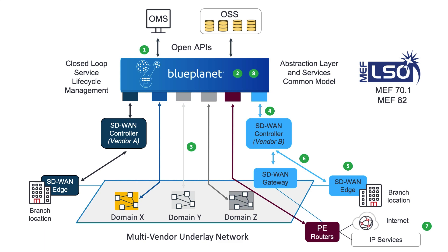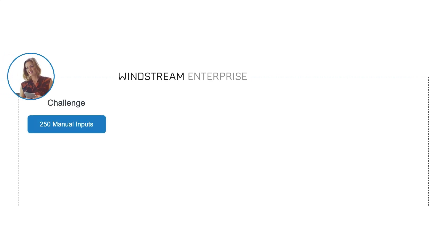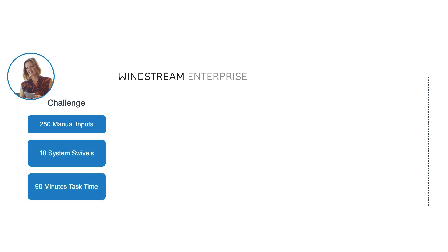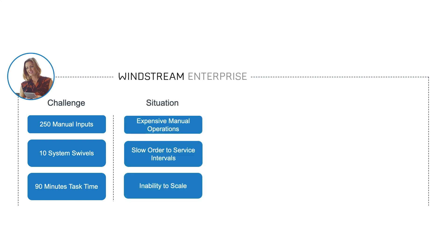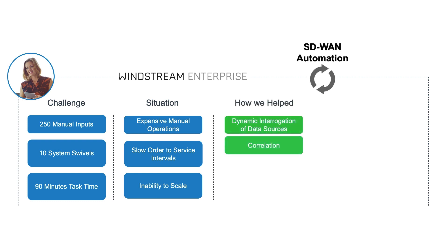Let's look at the areas of value offered when customers deploy SD-WAN automation. In the deployment with Windstream, they were performing around 200 manual inputs for SD-WAN controller configuration, and 50 additional manual inputs for PE router configuration when provisioning access from SD-WAN VPN to external IP services. This manual effort to collect and input data across 10 different systems was taking around 90 minutes of task time. Consequently, Windstream were experiencing expensive manual operations resulting in slow order-to-service intervals and an inability to scale to demand. With Blue Planet's SD-WAN automation solution, Windstream were able to input a single order, triggering dynamic interrogation of all data sources and correlation of the necessary information.